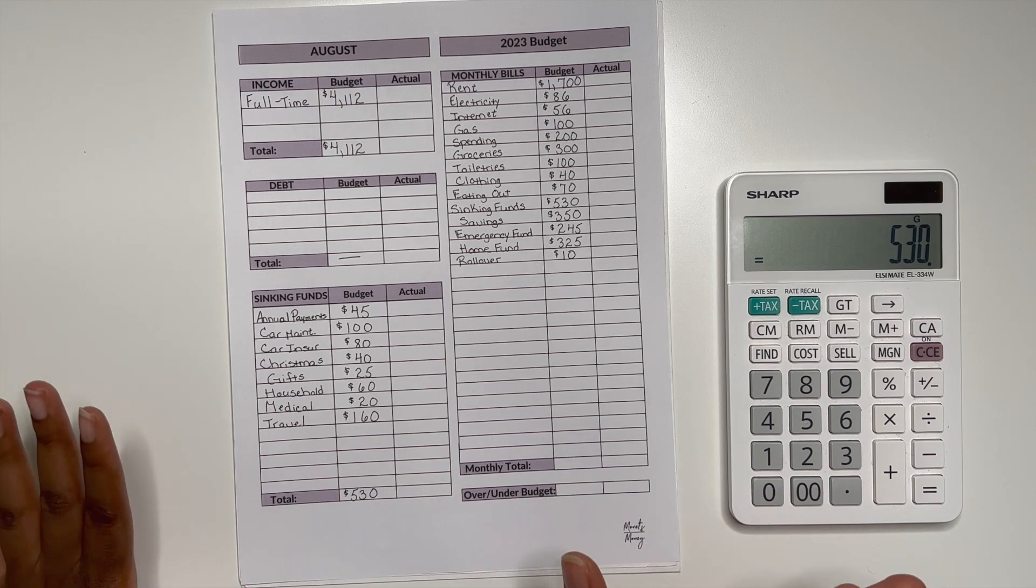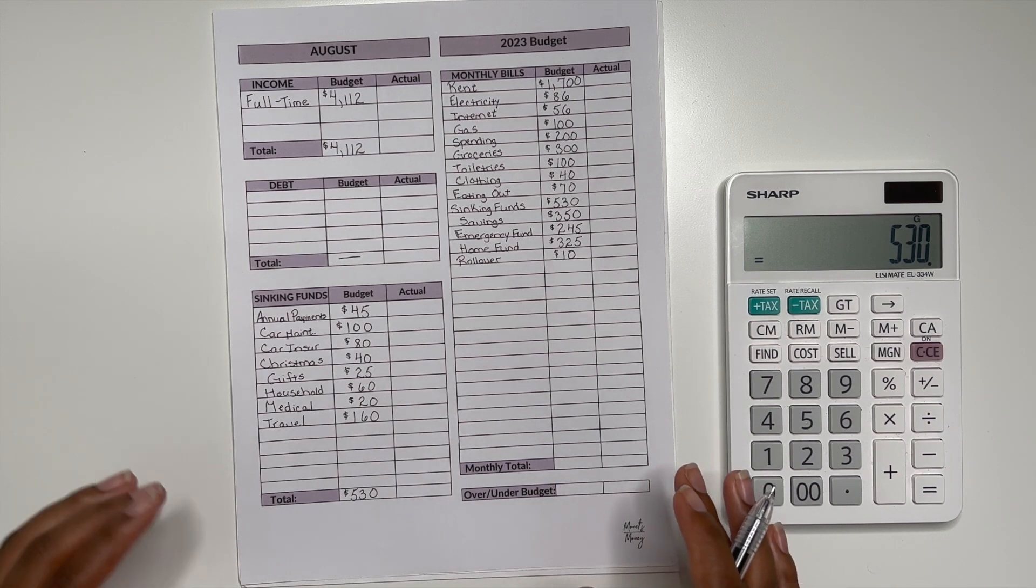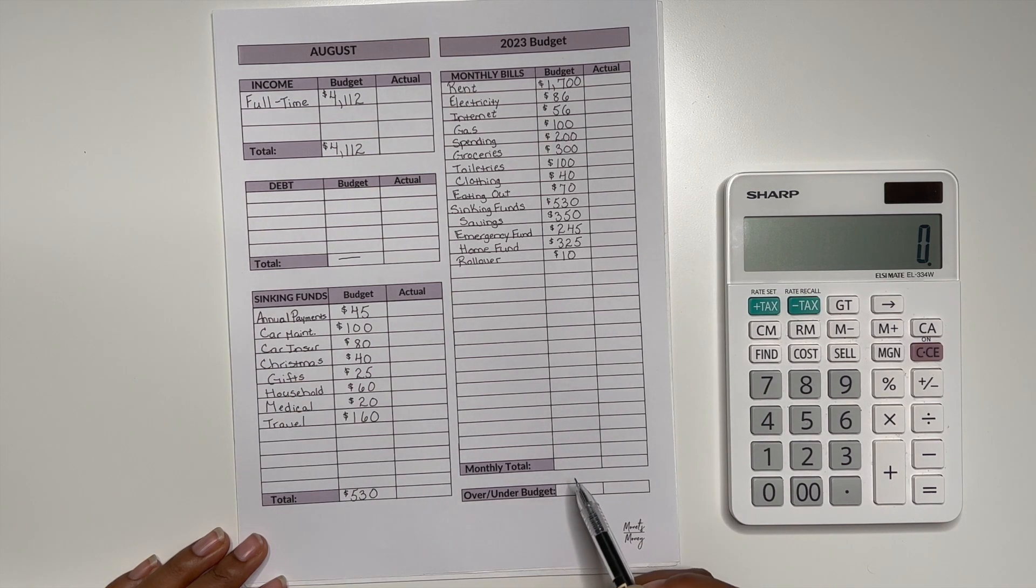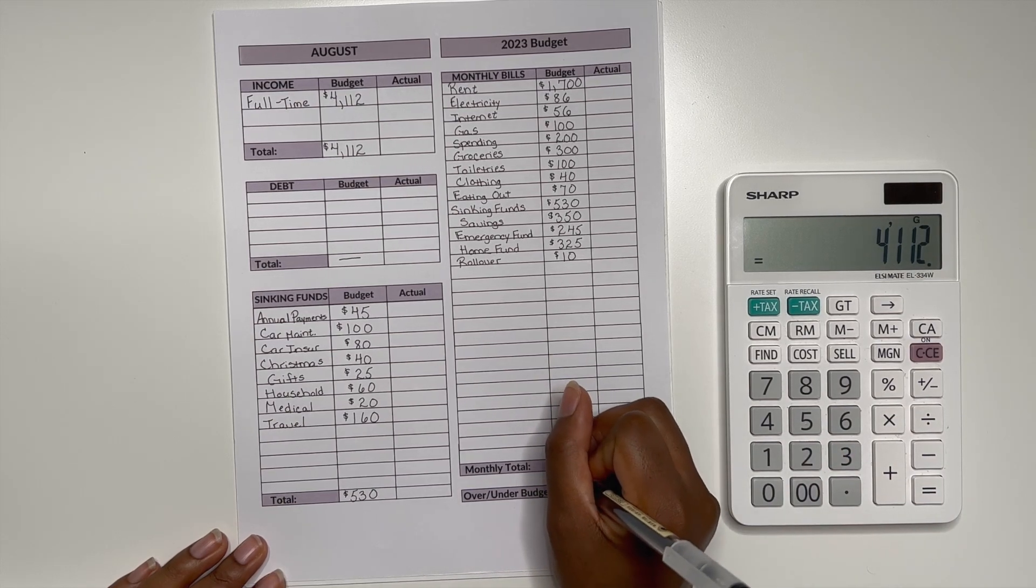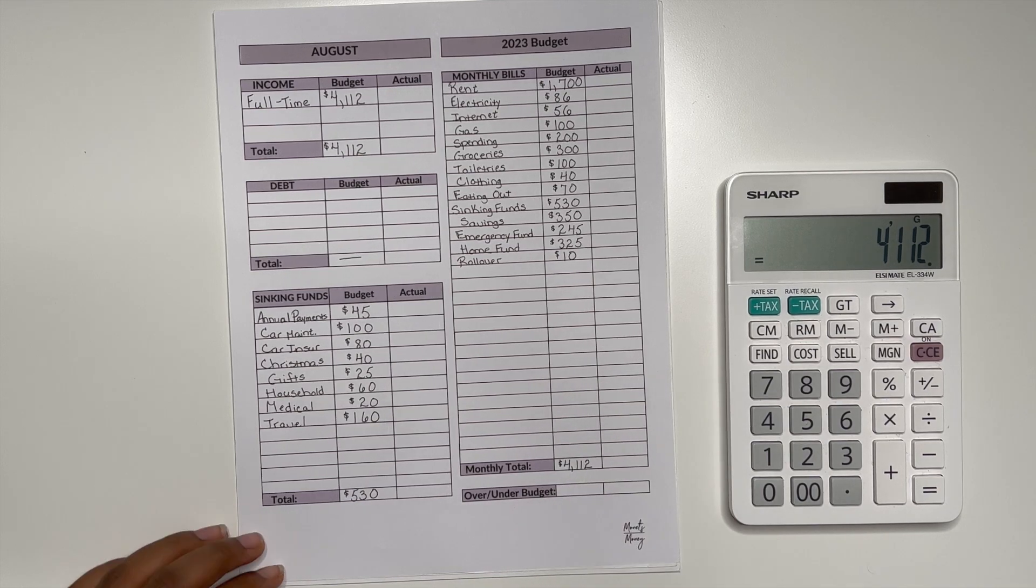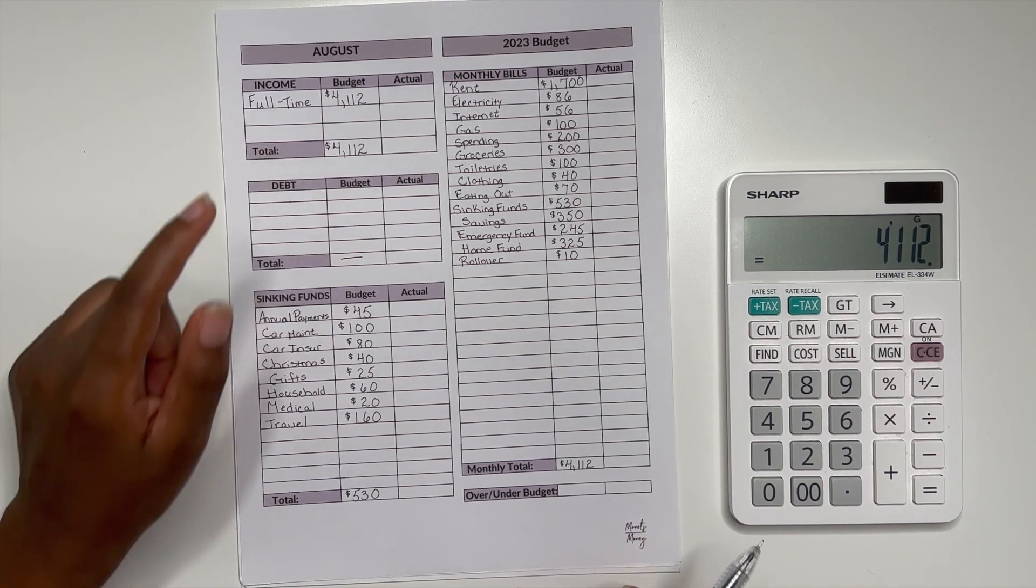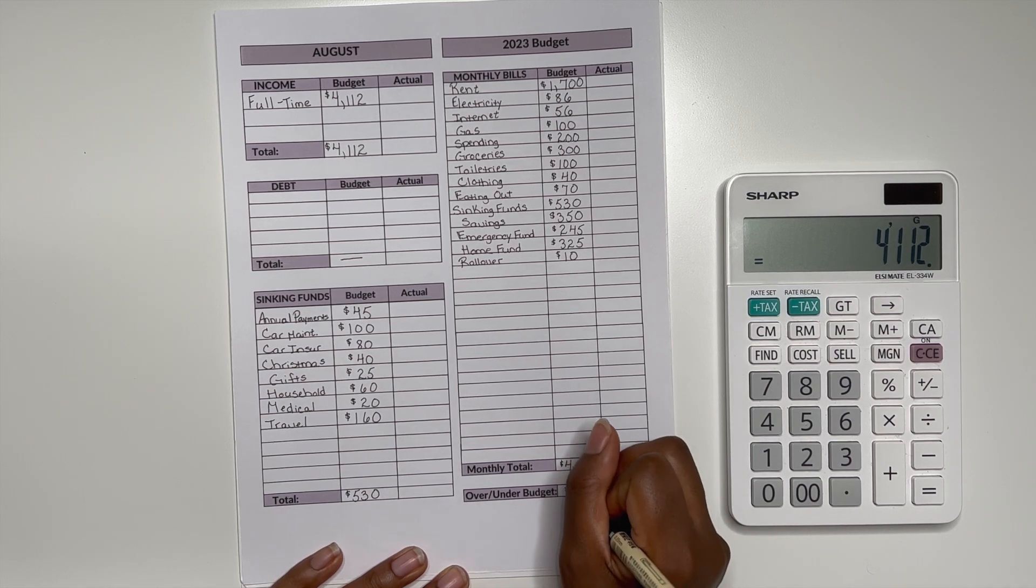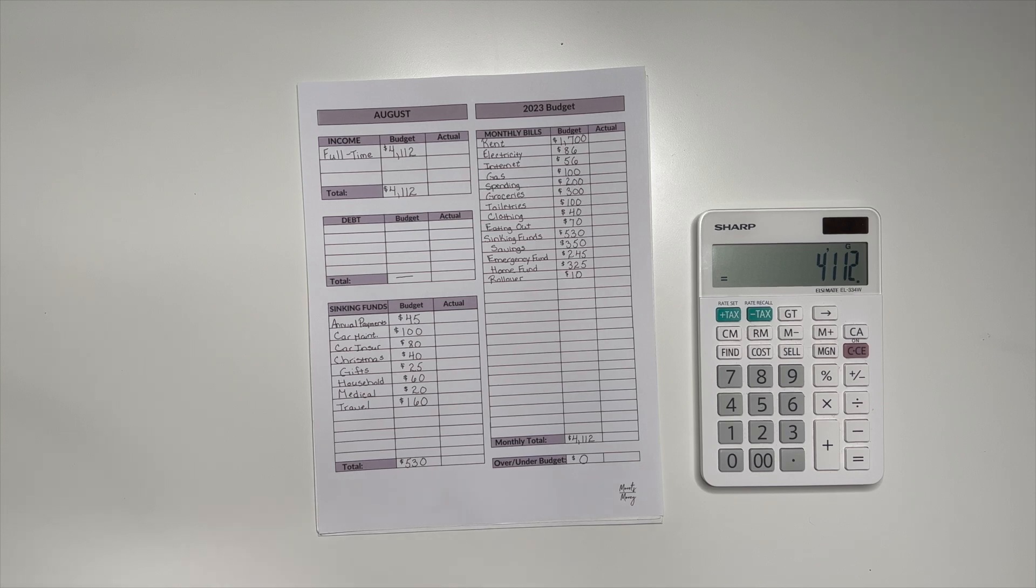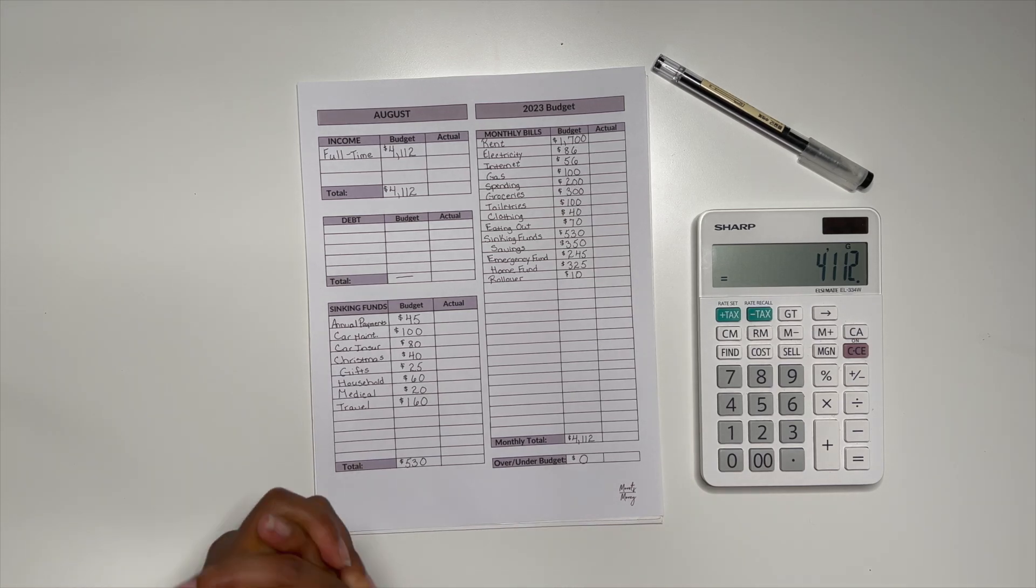And for the month of August that's all I am predicting. Of course as the month comes along something else might pop up. But as of right now this is what we're working with for the budget. So let's go ahead and total all of this up and see what we get for our monthly total. Alright so that gives us a monthly total of $4,112. So as we can see that matches the exact number that I am bringing in for my full-time income. I like to do a zero-based budget and give every dollar a place. So in terms of if I'm over or under budget I just write zero to let me know we zeroed it out. But when it comes to the monthly breakdown that's all I do. We see that I have enough funds coming in to support. So now we'll just see how the month plays out.